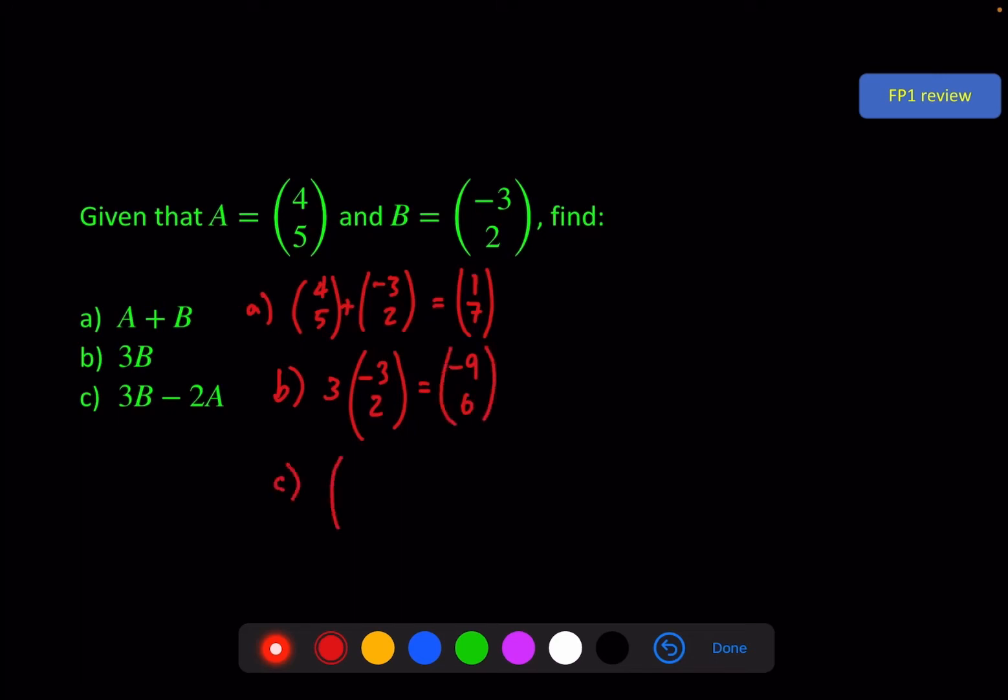And part c, 3 times b, which we've just got there, minus 2 times a. Gives us a result of minus 17 and minus 4. And there we go.